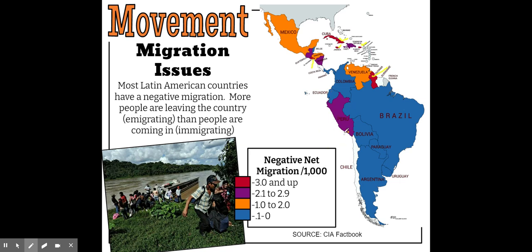2.1 to 2.9 people per 1,000 are leaving Peru, Haiti, Dominican Republic, Nicaragua, and Guatemala. One to two people per 1,000 are leaving Mexico, Honduras, and Venezuela. So why are people leaving Latin America and where are they going?